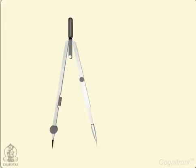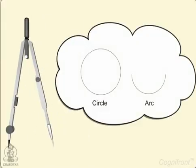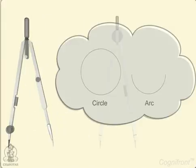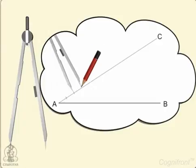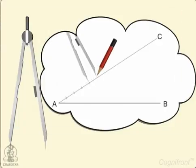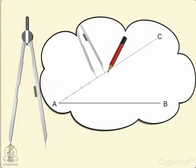As you already know, the compass is used for drawing circles and arcs. The divider is a little different, with both legs made of steel, and is used for transferring distances.